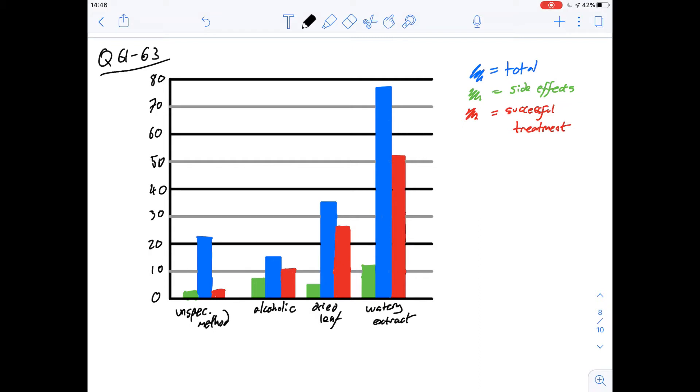So this is a question about a drug called Digitoxin and it increases the speed and the force of heart contraction but there are some side effects and the different ways of producing this and different extracts can lead to different outcomes both in side effects and the levels of success in treatment and that's what this graph is showing.